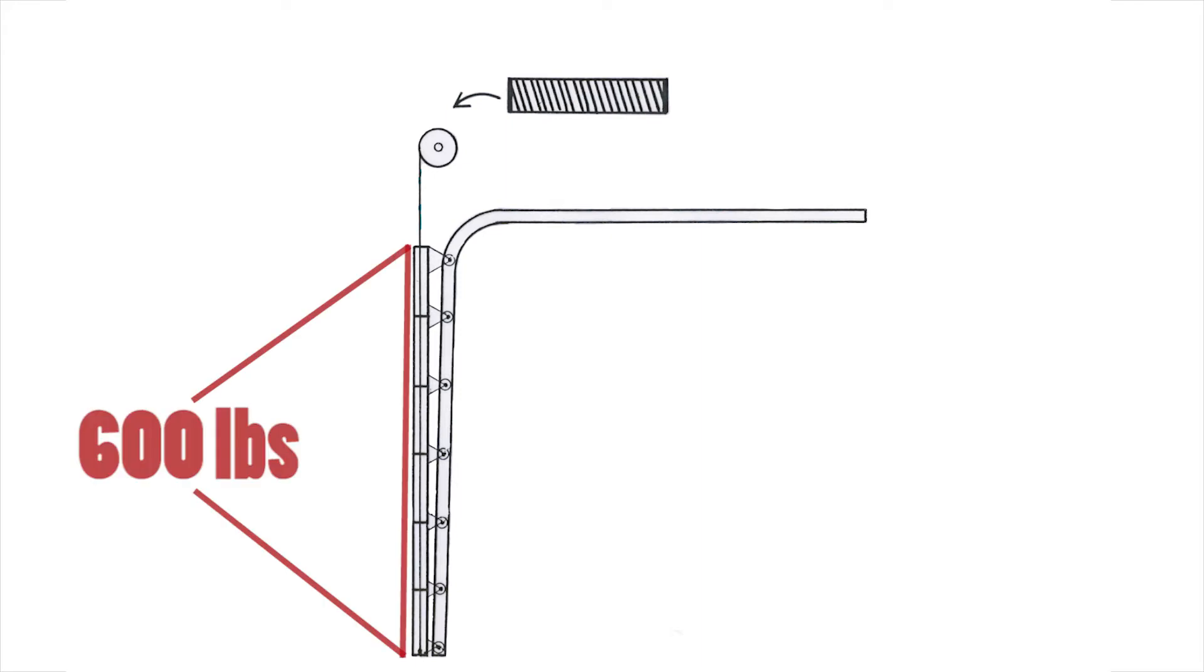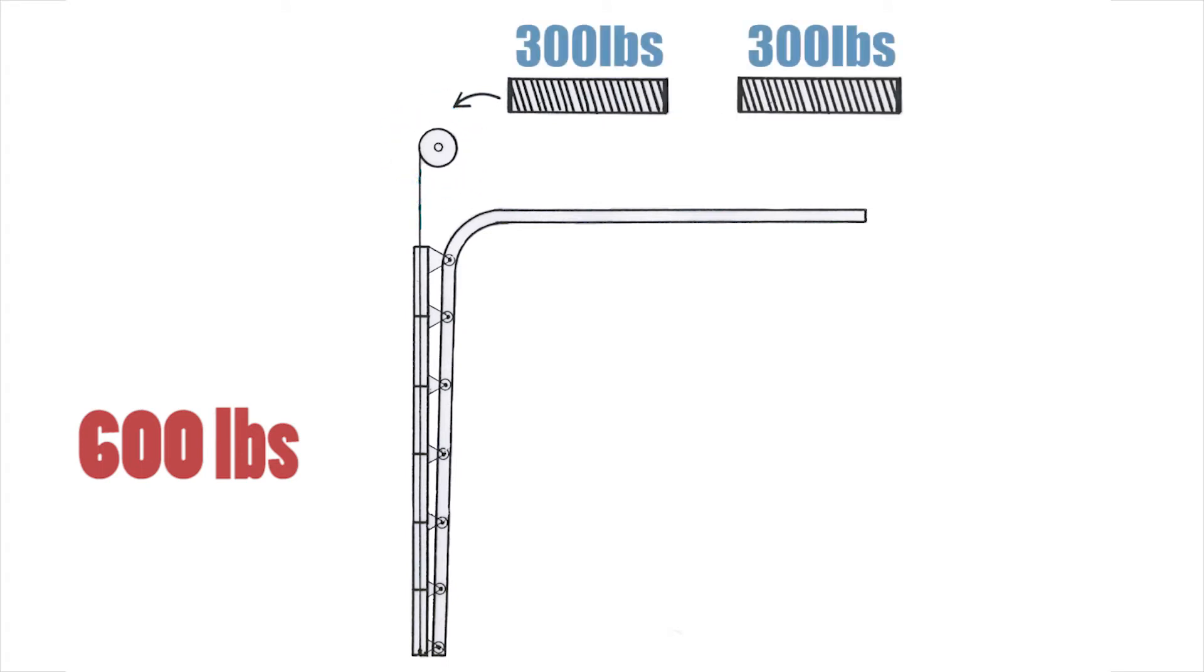This door weighs 600 pounds and is comprised of six 100-pound sections. The cable drum has a 24-inch circumference, and the spring is designed so that when it is wound six turns, each drum will pull 300 pounds, for a total of 600 pounds of force on the cables which are attached to the bottoms of the doors.